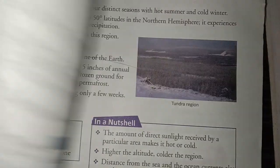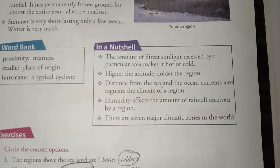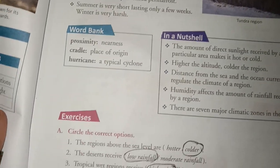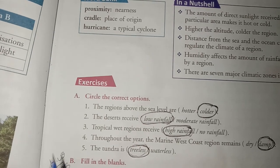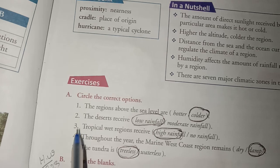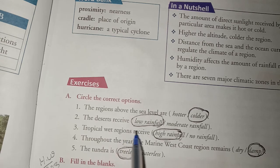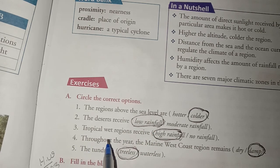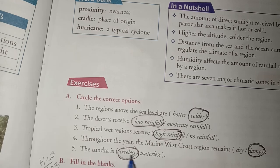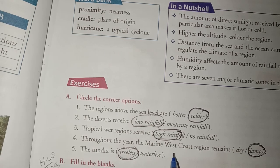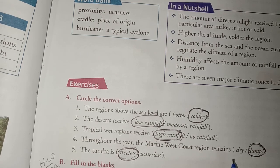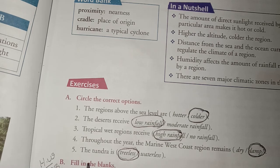Let's start now. Circle the correct options. First, the regions above the sea level are colder. Second, the desert receives low rainfall. Third, tropical wet regions receive high rainfall. Fourth, throughout the year the marine west coast region remains damp. Fifth, the tundra is treeless.